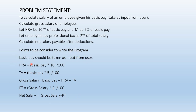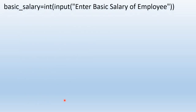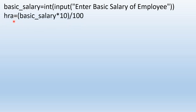These are the points we need to consider to write our Python program. After that we need to display our results. So first of all we take the basic salary as input from the user — we use the input function and display the message 'Enter basic salary of employee'. After reading this message, the user will enter the basic salary. Then we calculate HRA, which is 10 percent of basic salary.